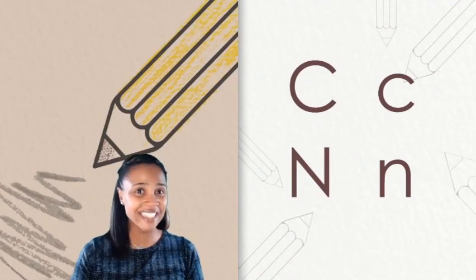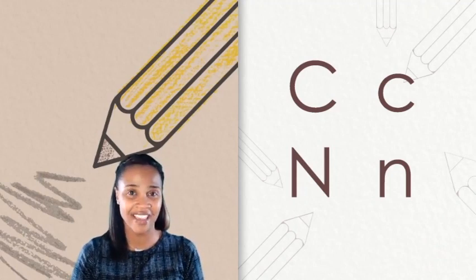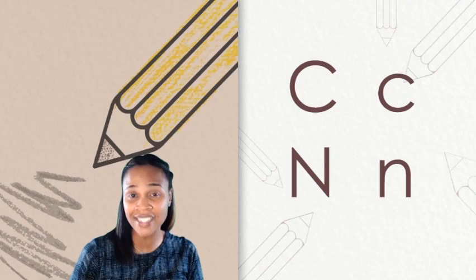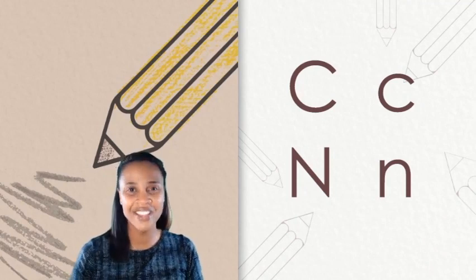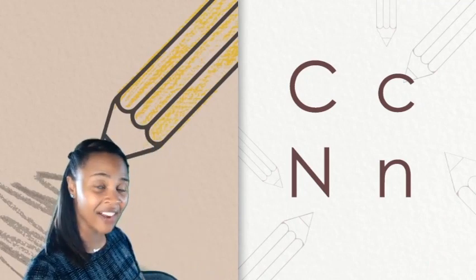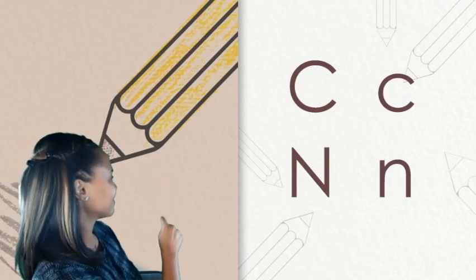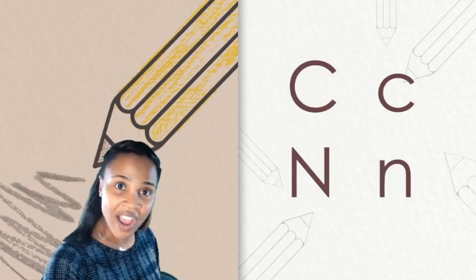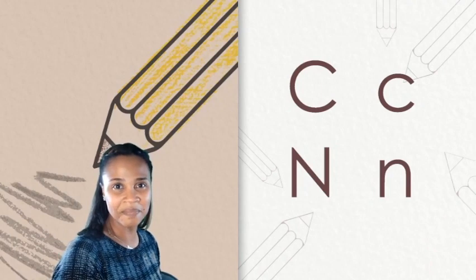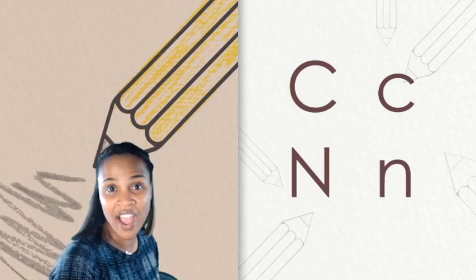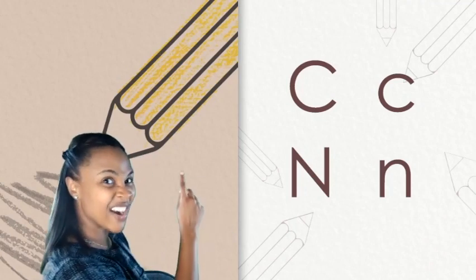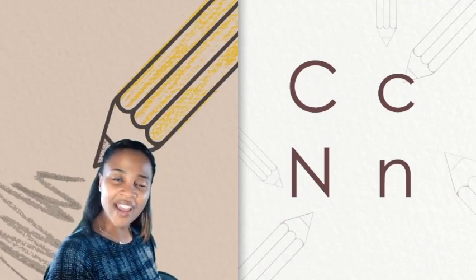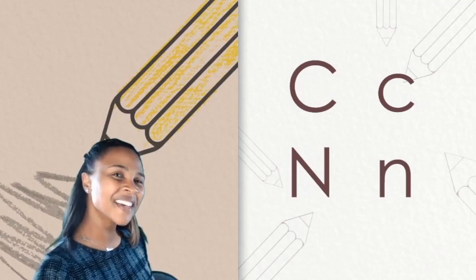Now let's try and skywrite our letters N and C. We'll start with the uppercase N. I want you to watch me first — I'm going to practice skywriting the letter, make the sound, and then you can try. Ready? Watch me as I skywrite the uppercase N. N. Now you try. Good. Now let's try our lowercase N. Remember we start in the middle. N. You try. Nice work.